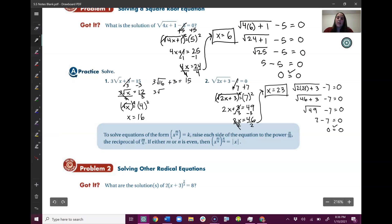So square root of 16 is 4. 3 times 4 is 12. 12, and 12 plus 3 is indeed 15. Checks out. So that is our answer.